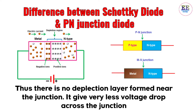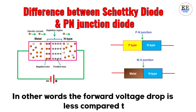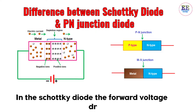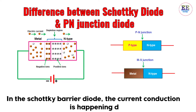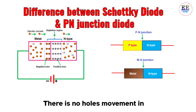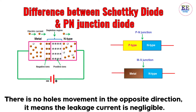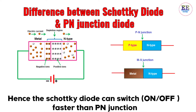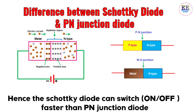Thus there is no depletion layer formed near the junction, which gives a very low voltage drop across the junction. In other words, the forward voltage drop is less compared to the normal PN junction diode — in the Schottky diode it is 0.3 to 0.5 volts. Current conduction happens due to the movement of electrons only; there is no hole movement in the opposite direction, meaning leakage current is negligible. Hence the Schottky diode can switch faster than the PN junction diode.